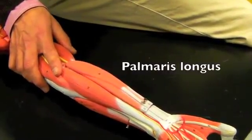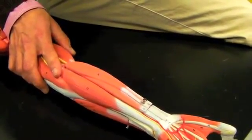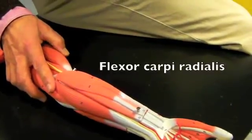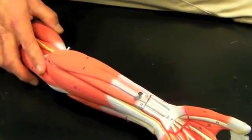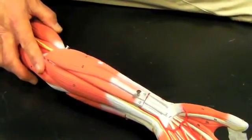Palmaris longus goes right down through the center of the palm, palmaris longus. Flexor carpi radialis. So it's a flexor that goes to the wrist and the radius, flexor carpi radialis.